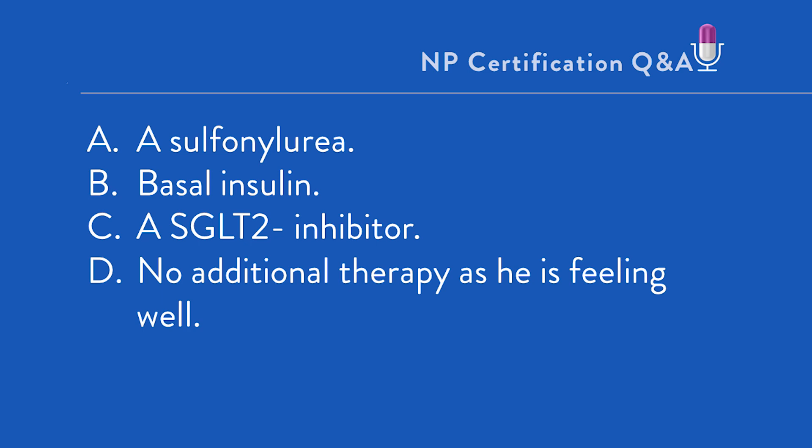The only lab parameter we're provided with is an A1C of 8.2%. On the NP boards, it's not uncommon to get just a little bit of information like this, and then you are to take it from there. The boards will not ask you to answer a question where you've truly been given inadequate information — you've got all the information you need in the body of the question. The goal A1C of less than 7% for most people with type 2 diabetes per ADA applies here. As a result, we know his glycemic control is suboptimal and therapy needs to be adjusted.